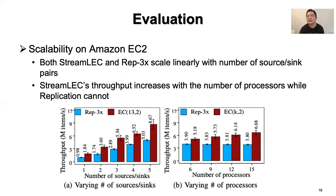We finally study StreamLake's scalability by varying the number of source-sink pairs and the number of processors. Both StreamLake and 3x replication scale linearly with the number of source-sink pairs, while StreamLake achieves an average throughput gain of 1.8 times over 3x replication. However, 3x replication cannot scale its throughput even as the number of processors increases, since its high redundancy equals high communication overhead at the source. In contrast, StreamLake's throughput increases with the number of processors.